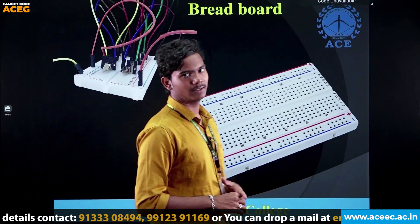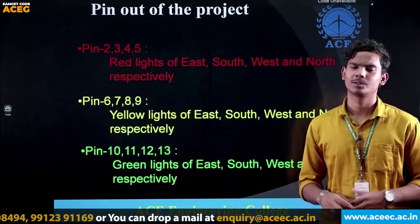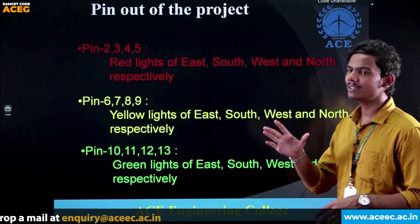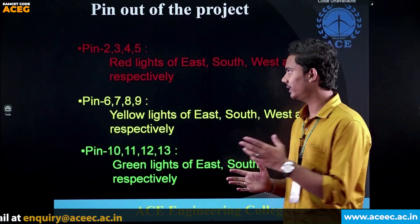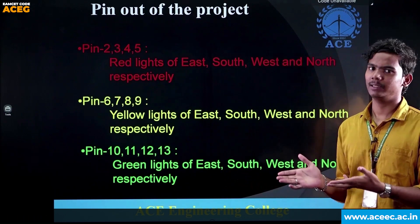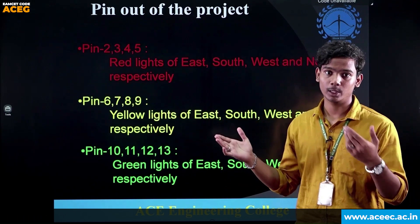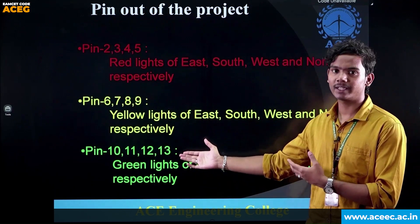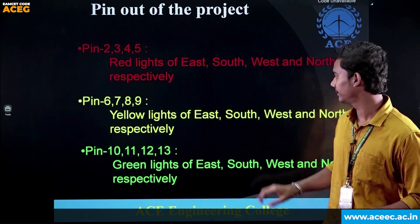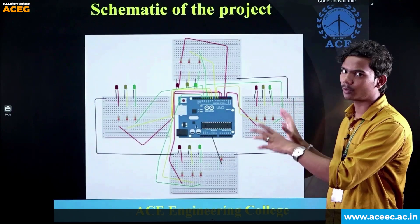We are also using a breadboard, which is a construction base used to build various electronic circuits. For the pin-out of this project: pins 2, 3, 4, and 5 are assigned to the red-colored LEDs; pins 6, 7, 8, and 9 are assigned to the yellow LEDs; and pins 10, 11, 12, and 13 are assigned to the green LEDs.